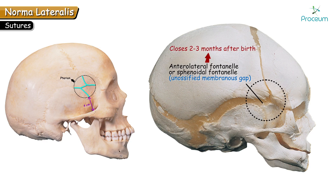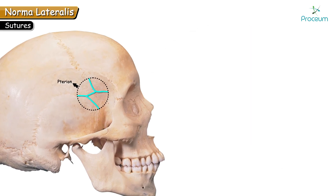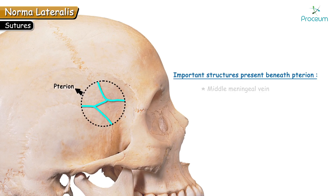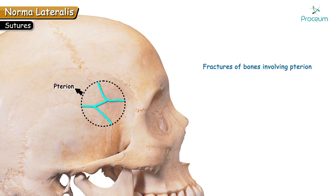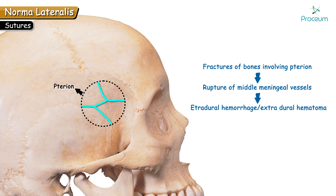Clinically, Pterion is very important because there are important structures present beneath it. These are the middle meningeal vein, the anterior branch of the middle meningeal artery, and, more deeply, the stem of the lateral sulcus, also known as the Sylvian sulcus. Fractures of bones involving the Pterion may cause rupture of the middle meningeal vessels, leading to leakage of blood known as extradural hemorrhage, resulting in a hematoma called an extradural hematoma.